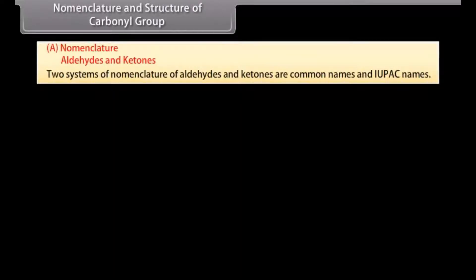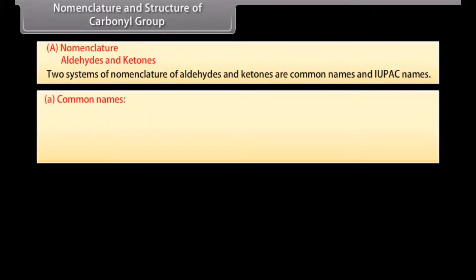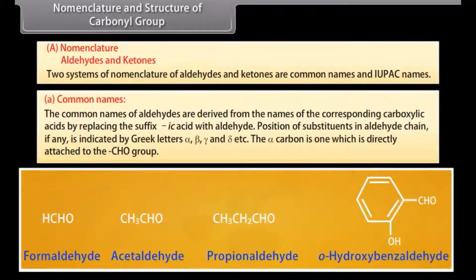Nomenclature and structure of carbonyl group. Two systems of nomenclature of aldehydes and ketones are common: common names and IUPAC names. The common names of aldehydes are derived from the names of the corresponding carboxylic acids by replacing the suffix '-ic acid' with '-aldehyde'. Position of substituents in the aldehyde chain, if any, is indicated by Greek letters alpha, beta, gamma, and delta. The alpha carbon is the one which is directly attached to the aldehydic group.